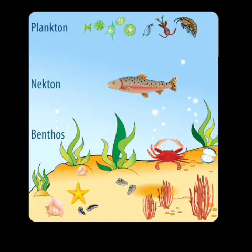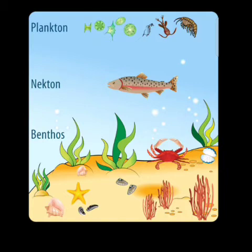Benthos refers to flora and fauna present at the bottom of the ocean floor. They can be either moving organisms or immobile and stationary in one place. So planktons, nektons, and benthos are the three modes of organisms present in the ocean.